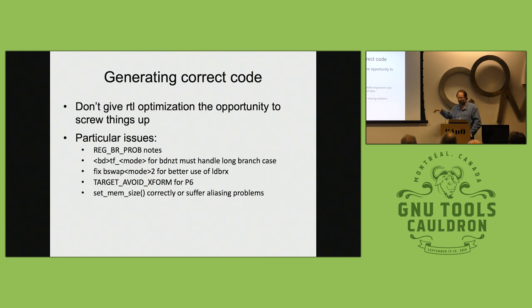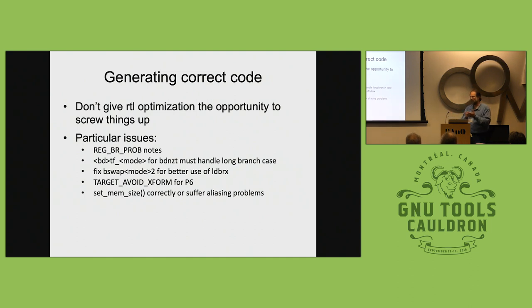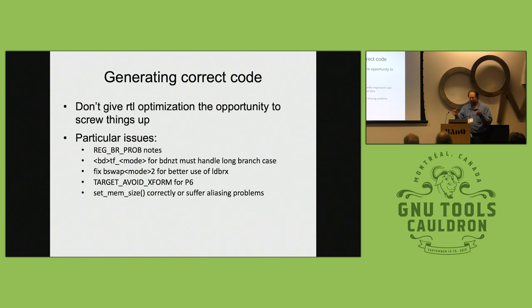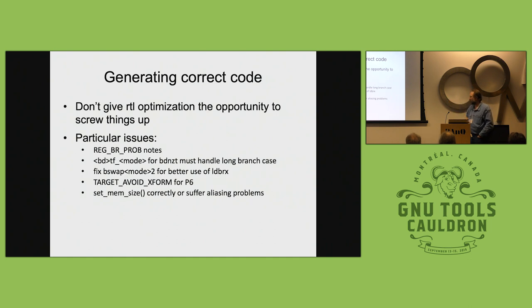If you're doing little-endian code, you want to load the native big-endian order because for string comparisons you want the first byte in the string to be the high-order byte in the register — that's big-endian order. In little-endian order you get the opposite, so the bytes are reversed, which is not helpful.